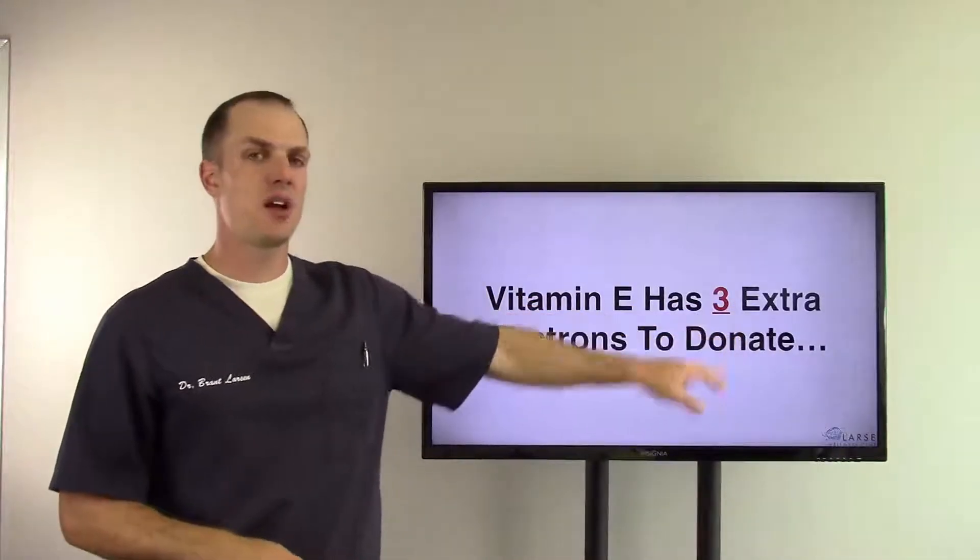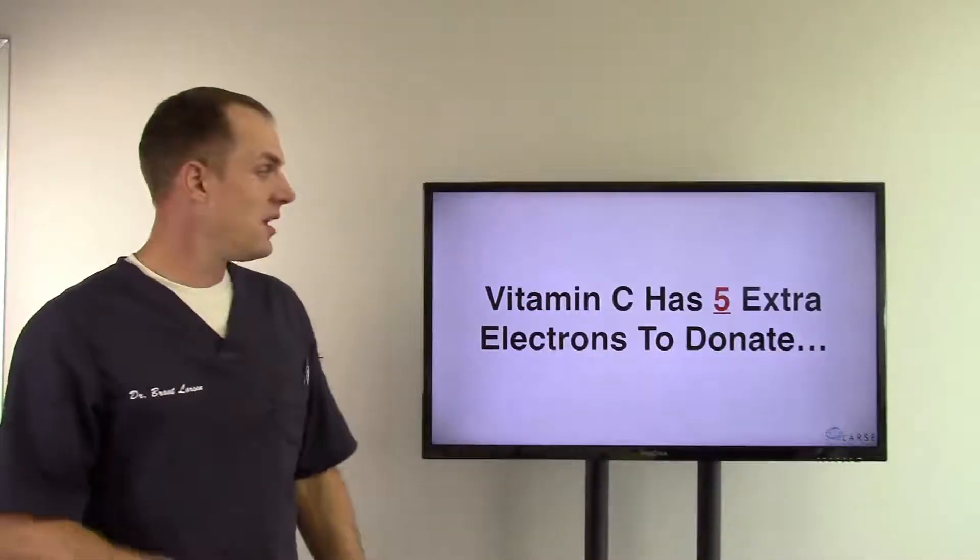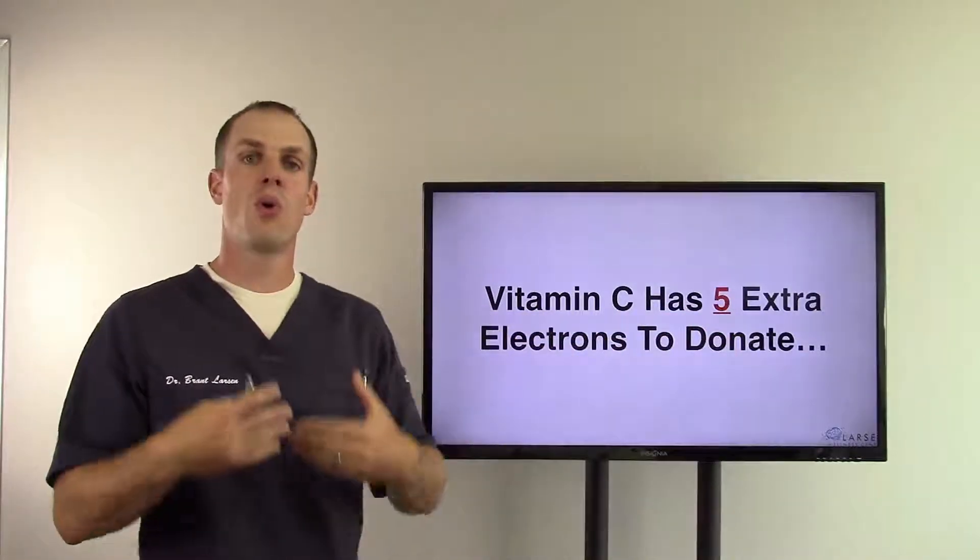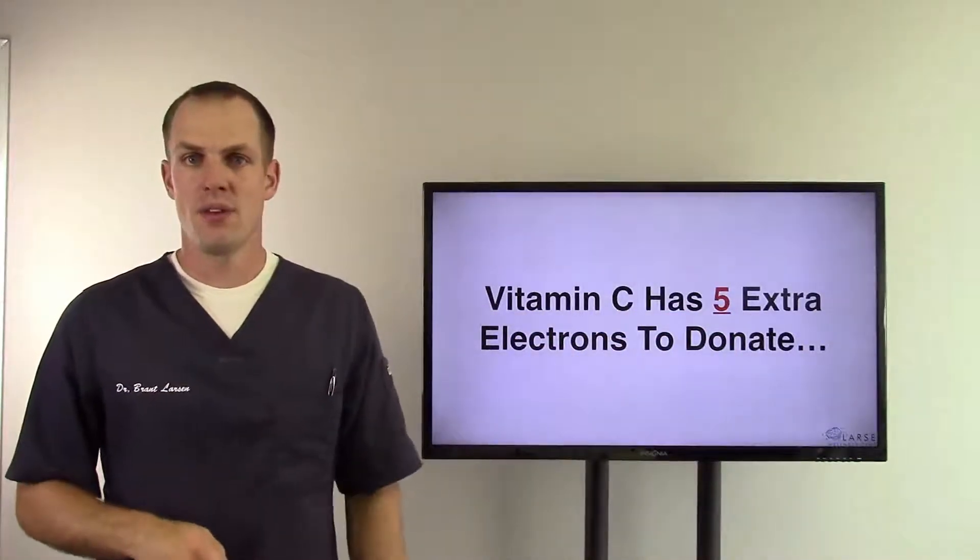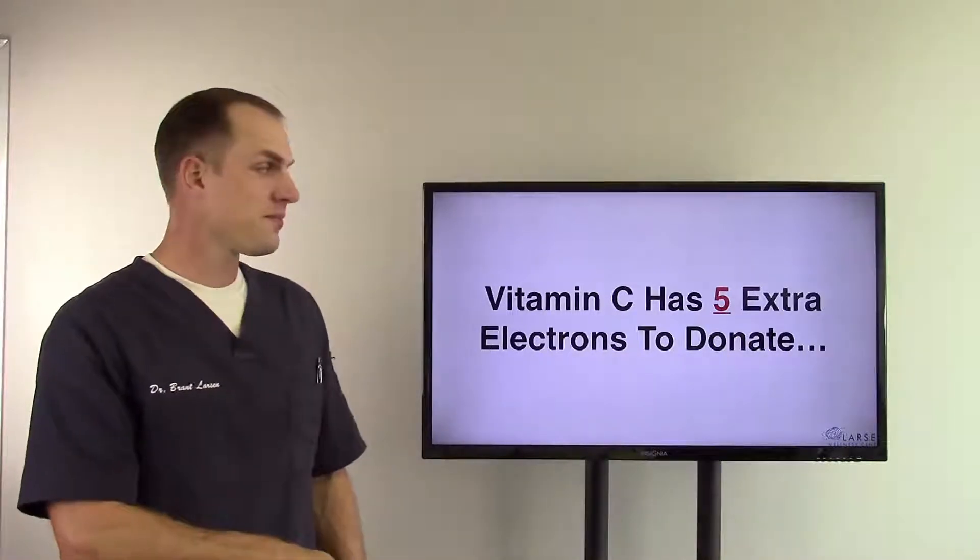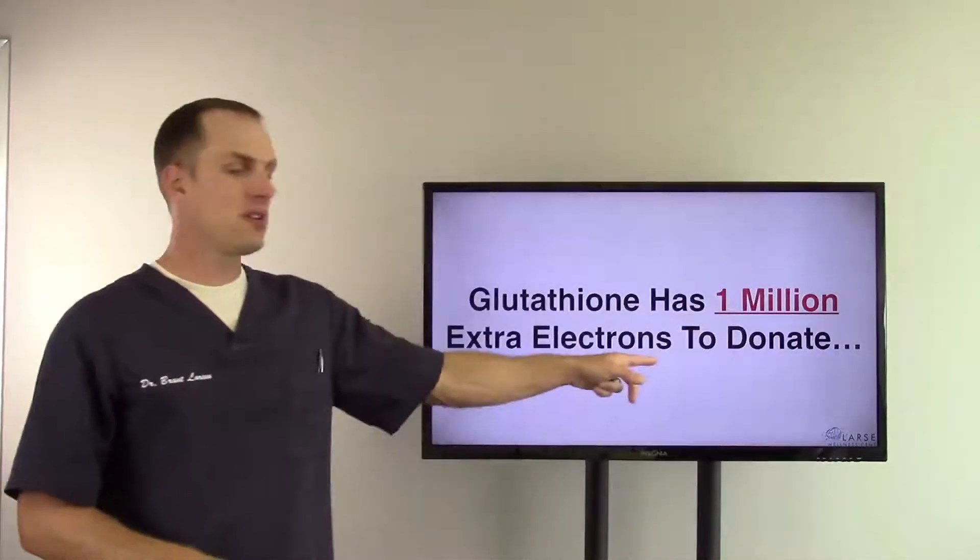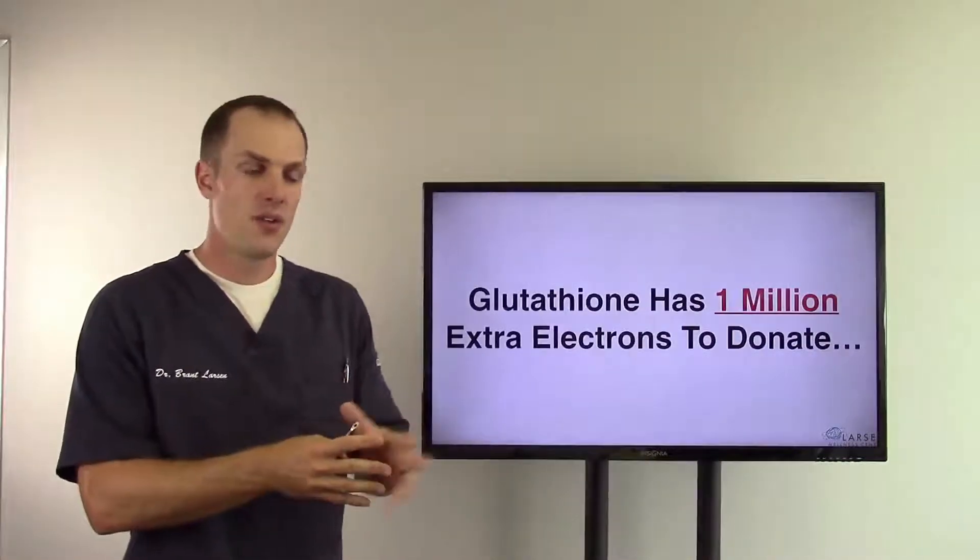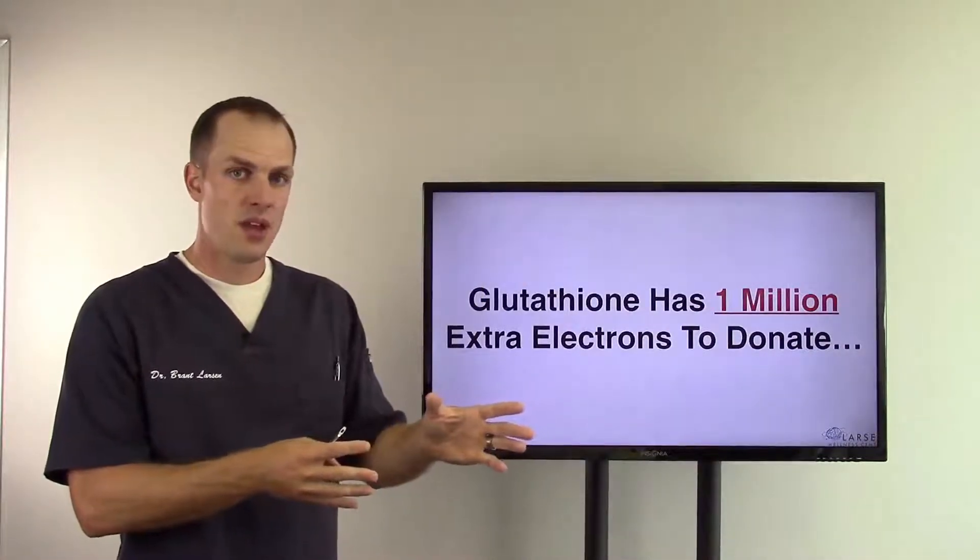Now most people have heard of vitamin E being an antioxidant of some kind, right? So it has three extra electrons to donate. Vitamin C is an antioxidant as well - five extra electrons, so it has more antioxidant power than vitamin E. But what about glutathione? Your cells make this and it has one million extra electrons to donate. So it's very, very strong and your body makes it.